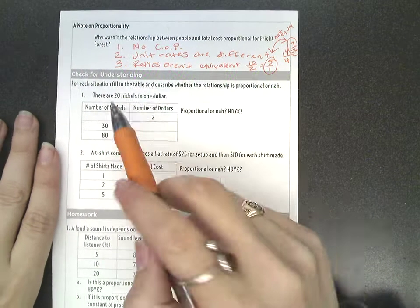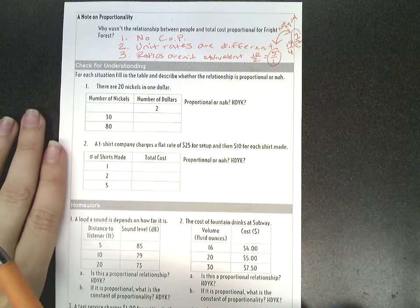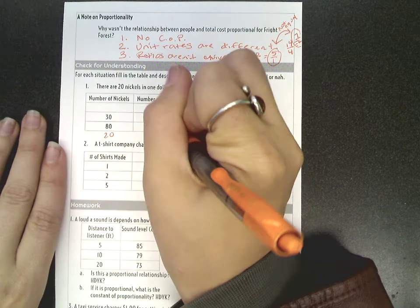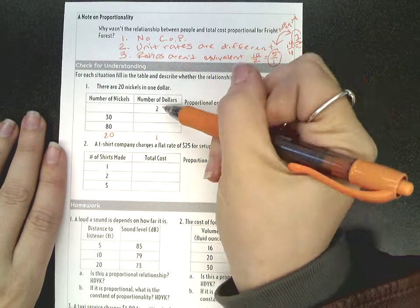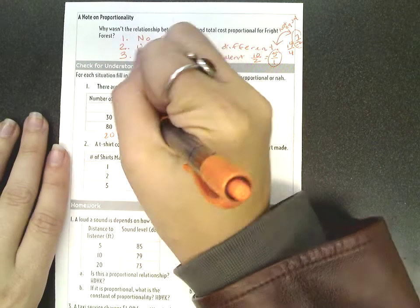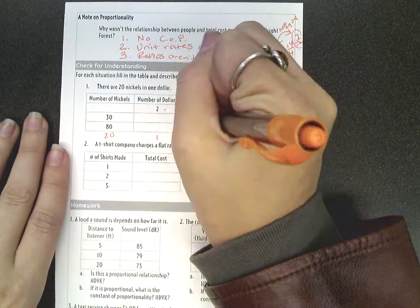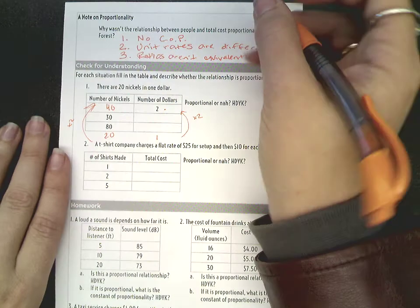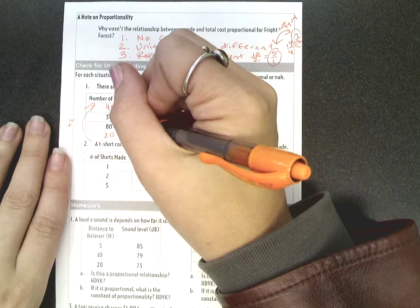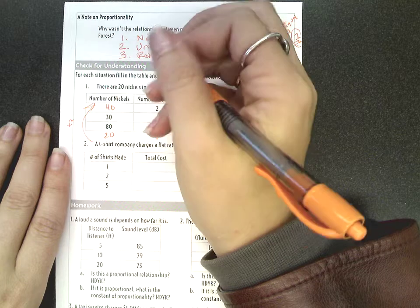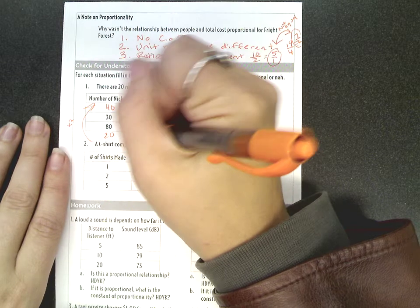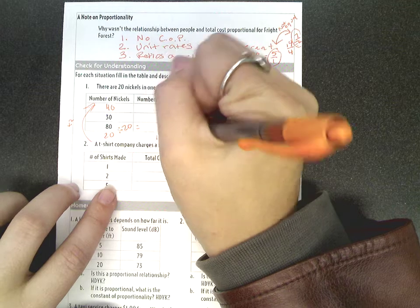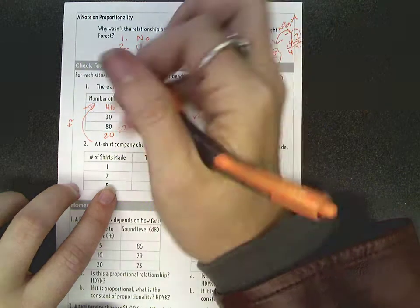So let's look at that down here in our CFU. There are 20 nickels in $1. So I could even just make, in $1, there's 20 nickels. In $2, that means there are going to be 40 nickels. If I have 80 nickels, well 20 nickels is 1. So 20, 40, 60, 80, it would be $4.